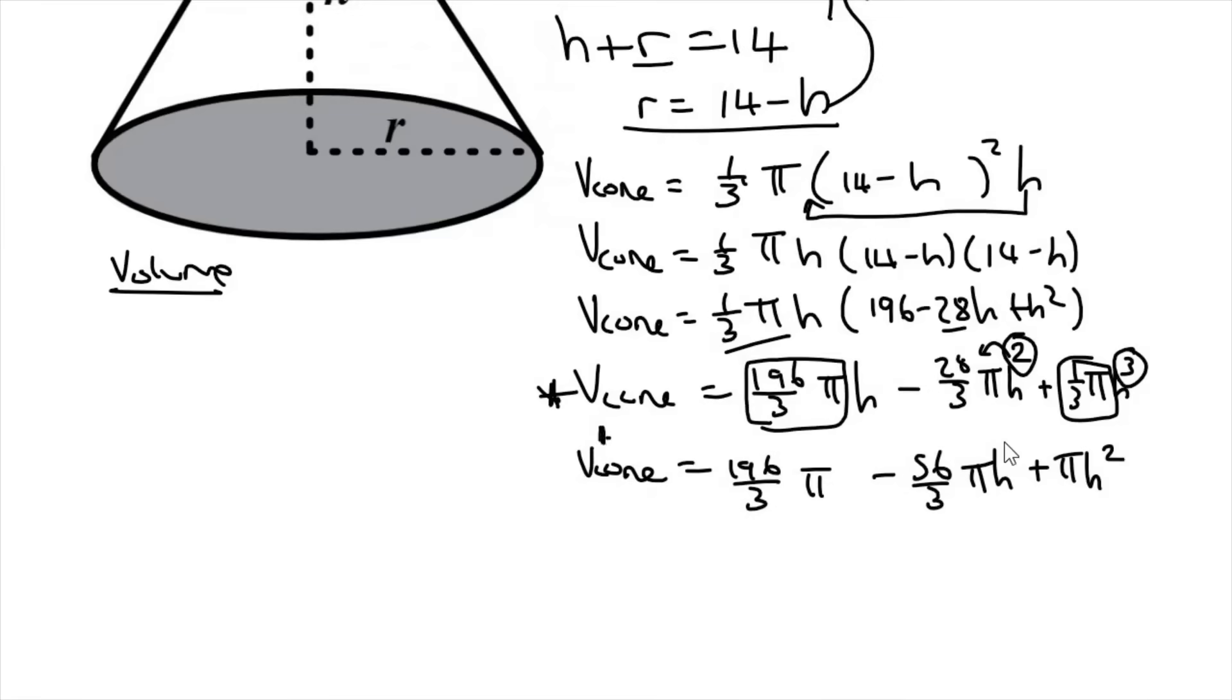There we go. Now, oh, and that's the first derivative. So I should put a little line there. Now we know that to find minimums and maximums, that's the first derivative equal to zero. So I'm just going to put a zero.